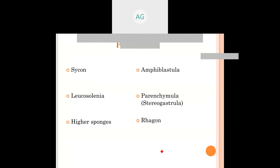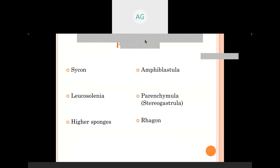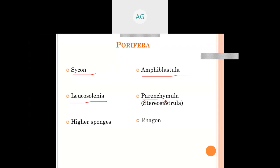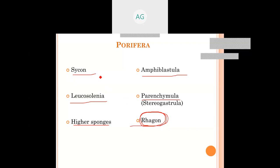Now I will start phylum-wise. In Porifera larvae: in Sycon, the larva is Amphiblastula; in Leucosolenia, the larva is Parenchymula; and in higher sponges with the leuconoid canal system, there is the Dracone larva. So for Porifera, the larvae are Amphiblastula, Parenchymula, and Dracone.